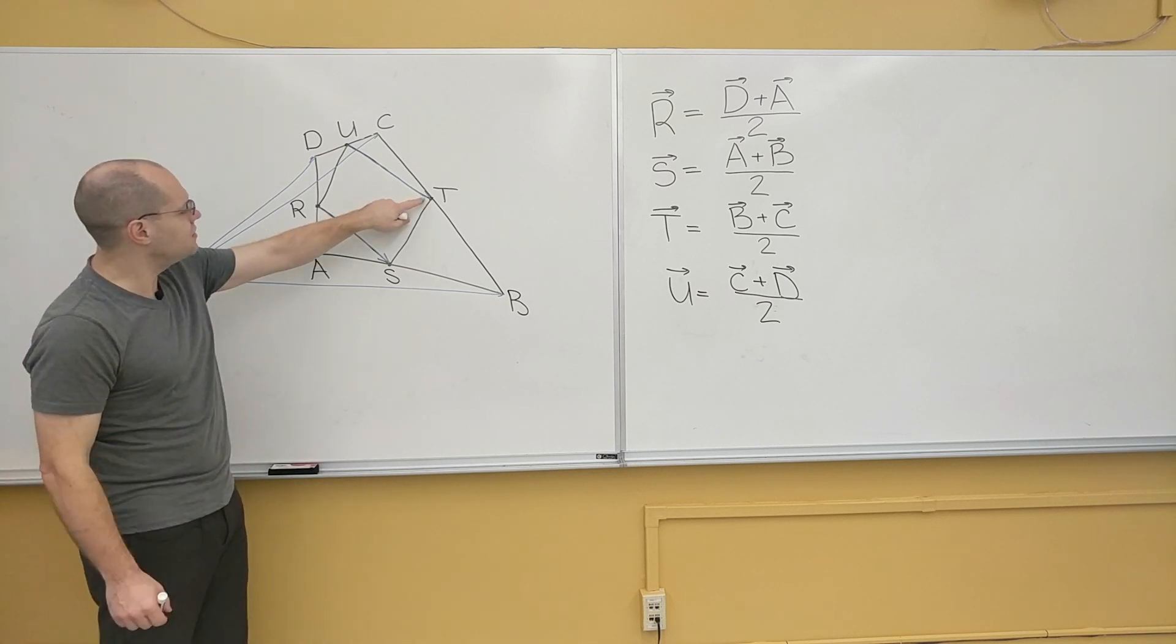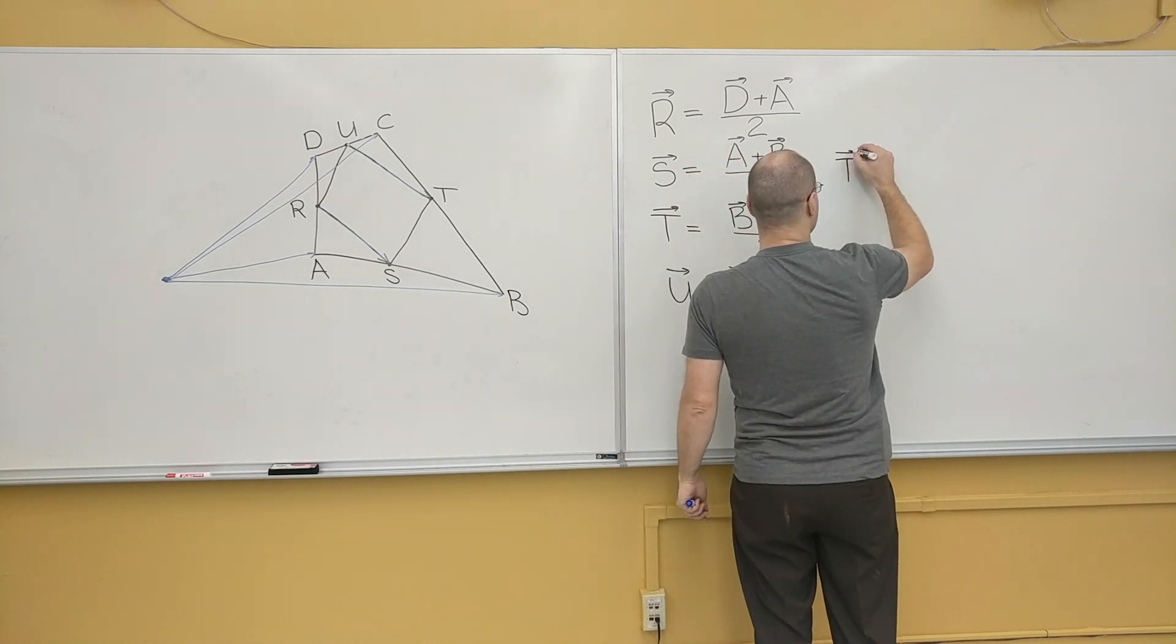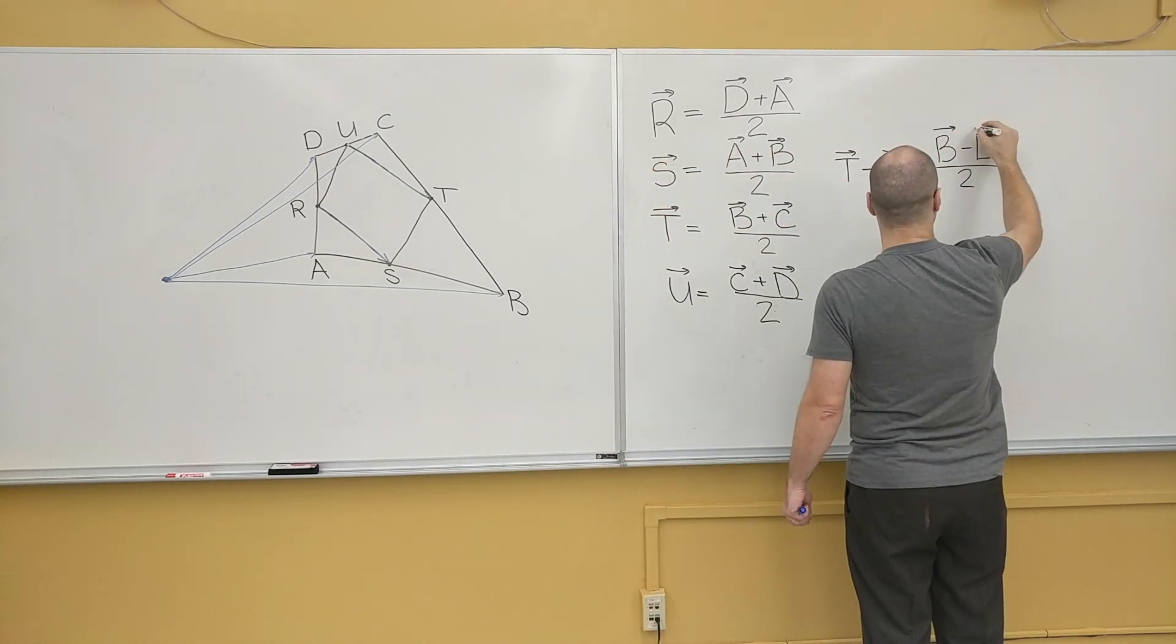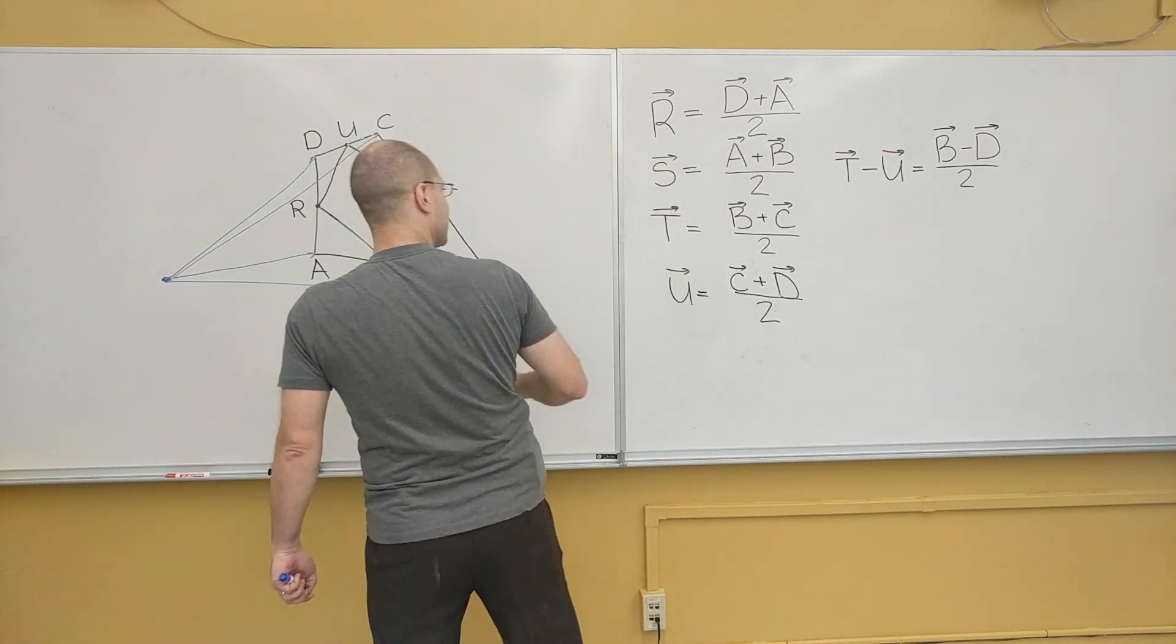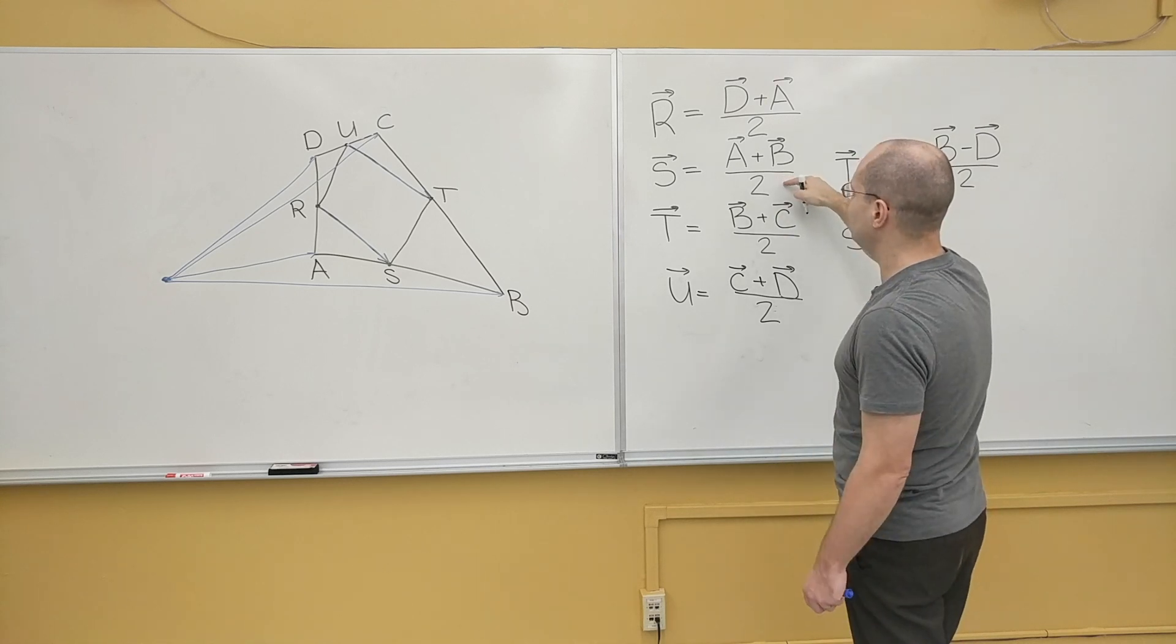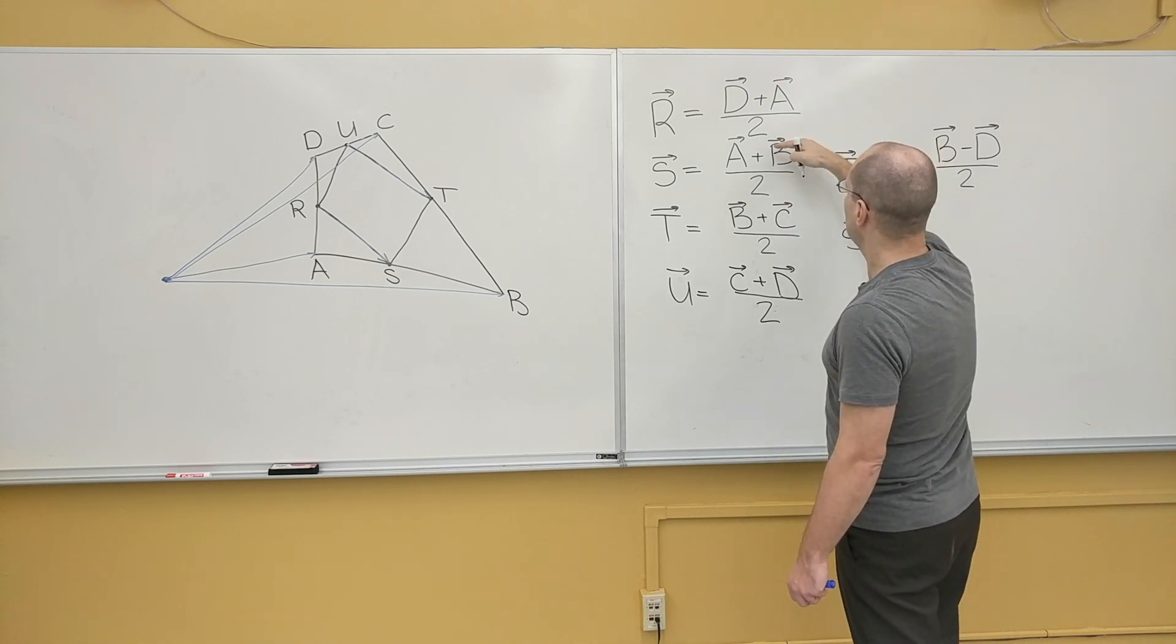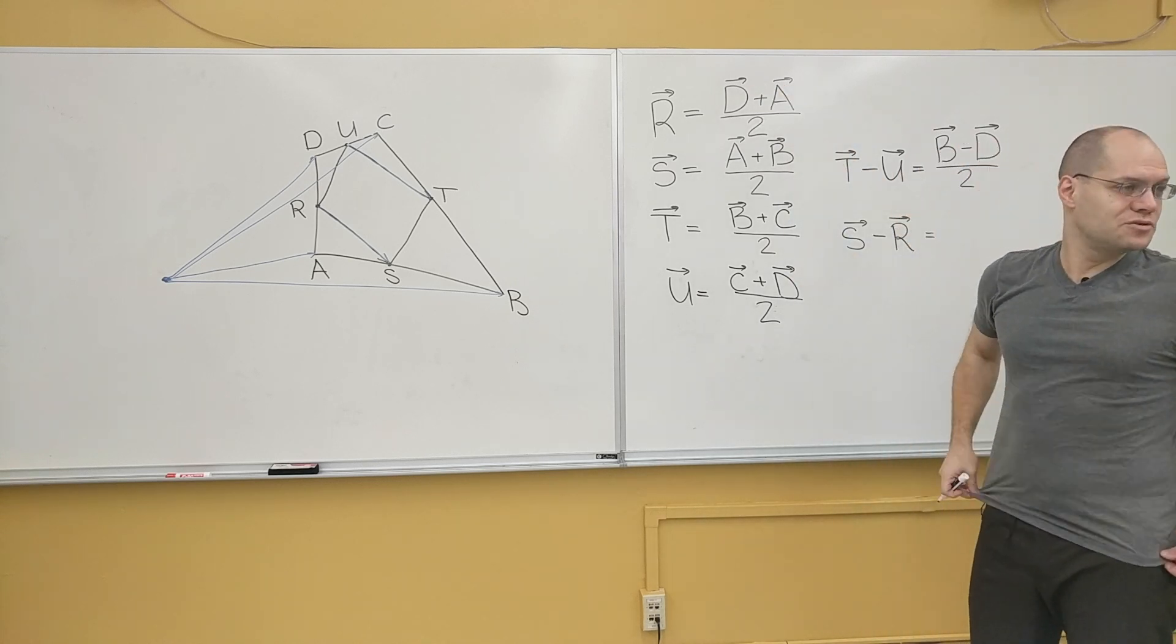So T, this vector right here, is T minus U. And now S minus R equals, let's see, S minus R. Here A's will cancel, and we have B minus D over 2.